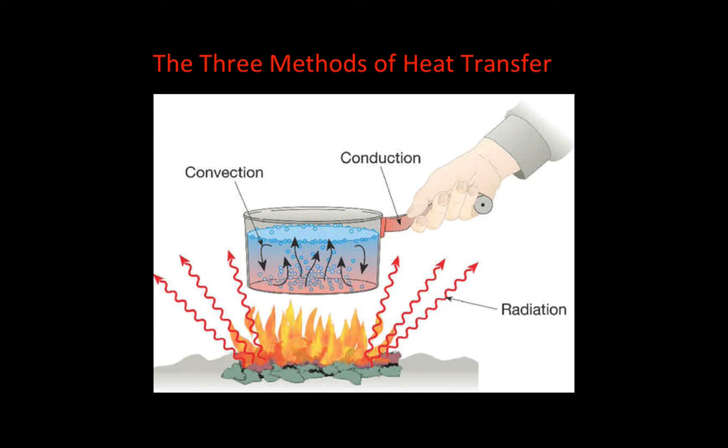In convection, hot water at the bottom of the pot is exchanged with cold water at the top. The hot material at the bottom physically floats upward and cold material sinks, creating little currents that move water around and equalize its temperature. This is what is happening when you see water boil.